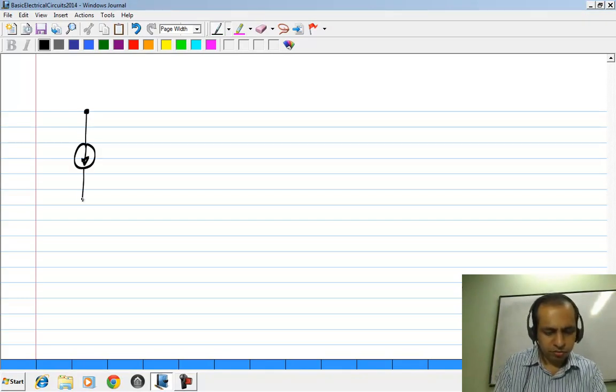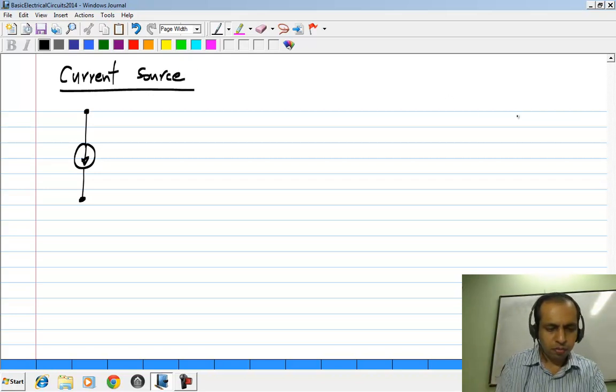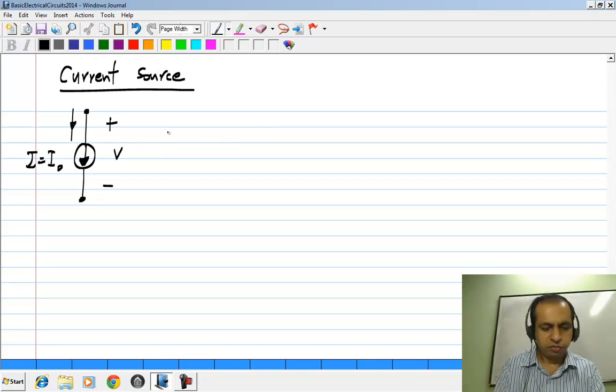This is the symbol for a current source. This arrow denotes the direction of the current definition, given by some I naught. Since the current is flowing this way, by passive sign convention we define the voltage V across it to be that way.